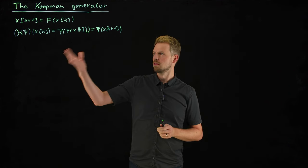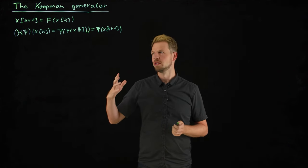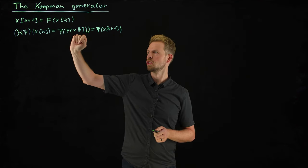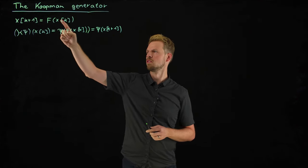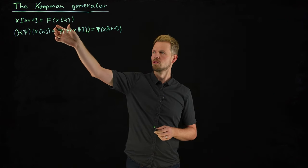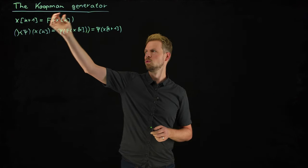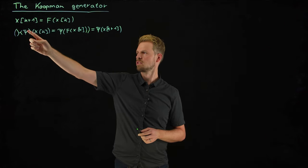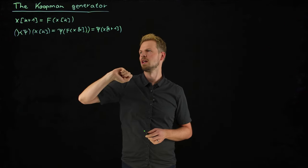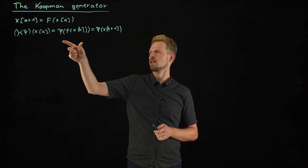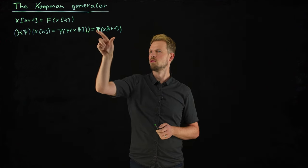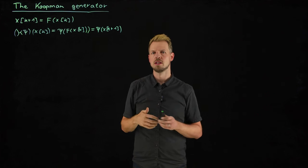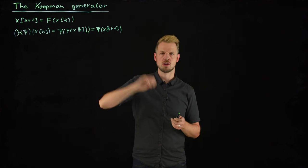Before we dive in, let's recap what the Koopman operator is really about. We have a dynamic system of discrete time nature where f is the flow map that maps our system state at time k to the next time instance. The Koopman operator is then defined as the linear operator that acts on observable functions psi in such a way that we observe the state at the next time. So it's a linear operator that transforms the observable function.